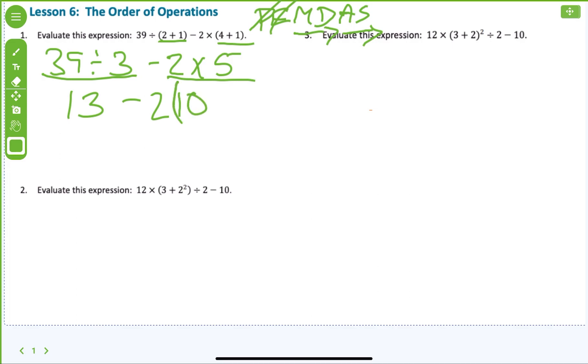Now let's go ahead and do 2 times 5 is 10. Minus 10. Now I can do 13 minus 10 is 3. There's your answer.